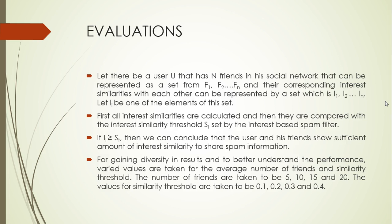Here I will be talking about the simulations and evaluations. Let there be a user U who has N friends in his social network, represented as a set from F1 to Fn, with their corresponding interests from I1 to In. First, all interest similarities are calculated and compared against the threshold. For diversity in results I chose network sizes of 5, 10, 15, and 20 friends, and similarity threshold values of 0.1, 0.2, 0.3, and 0.4.